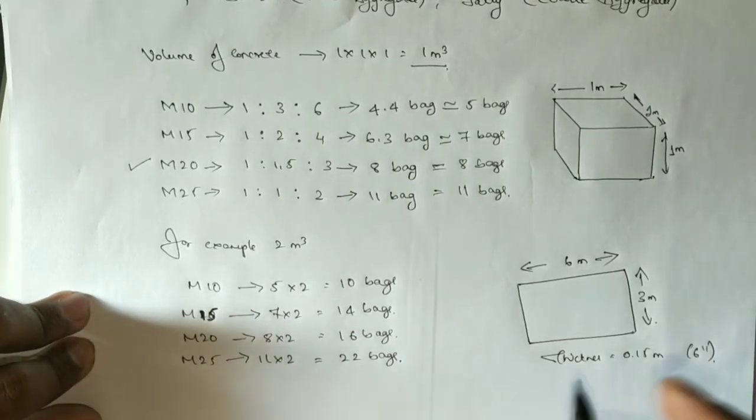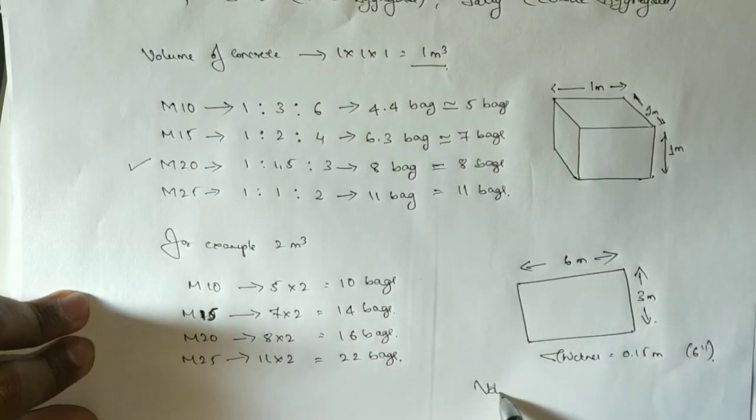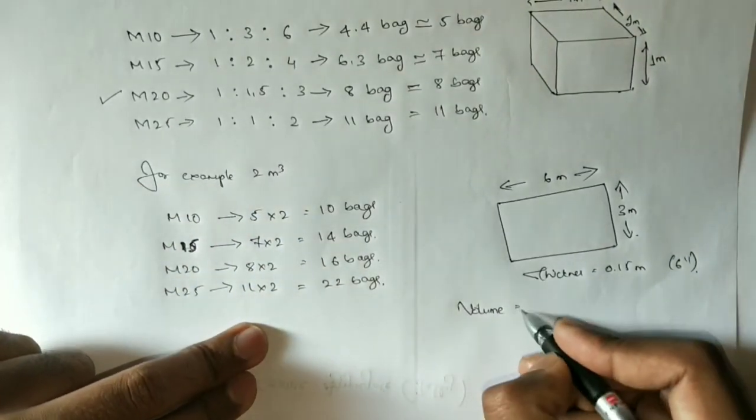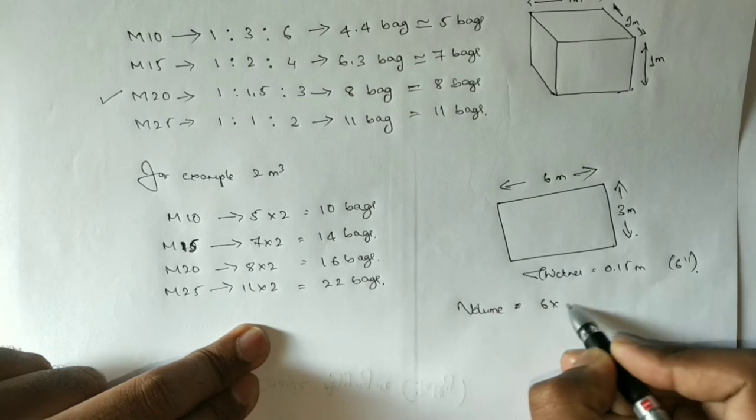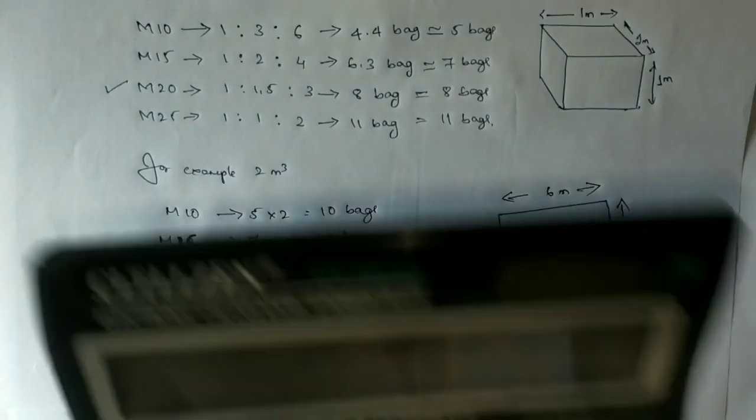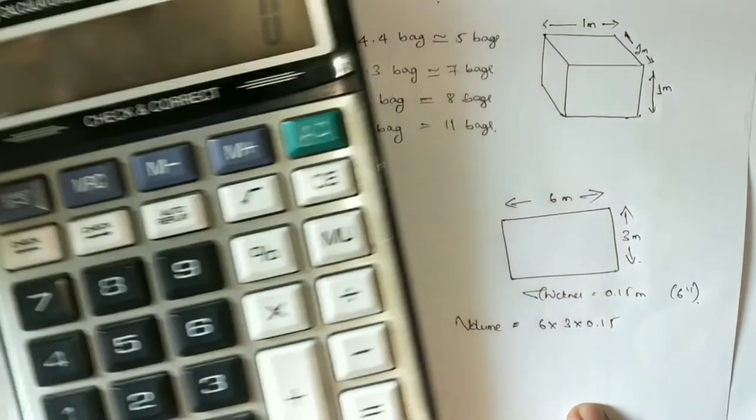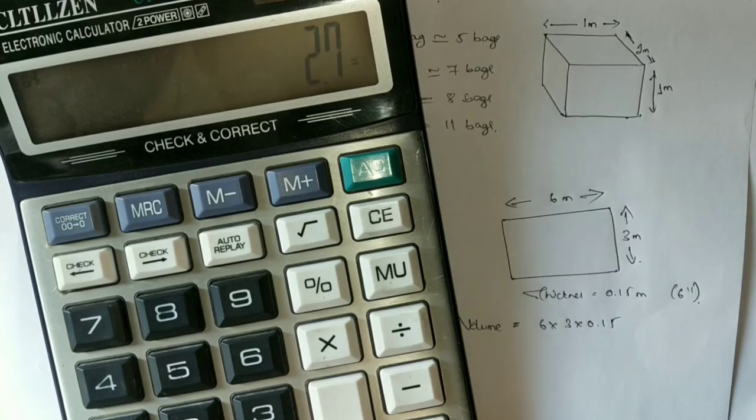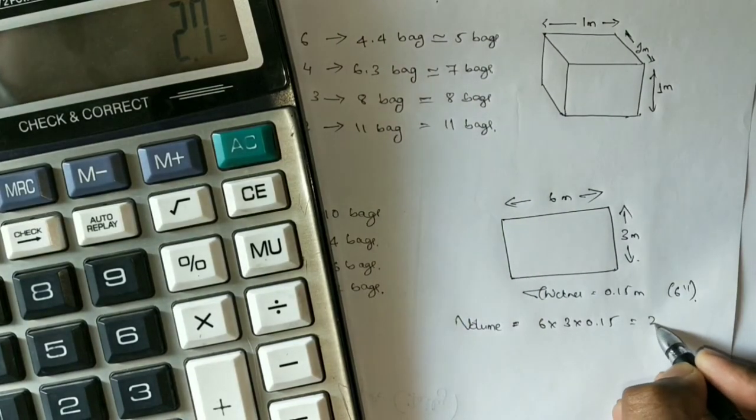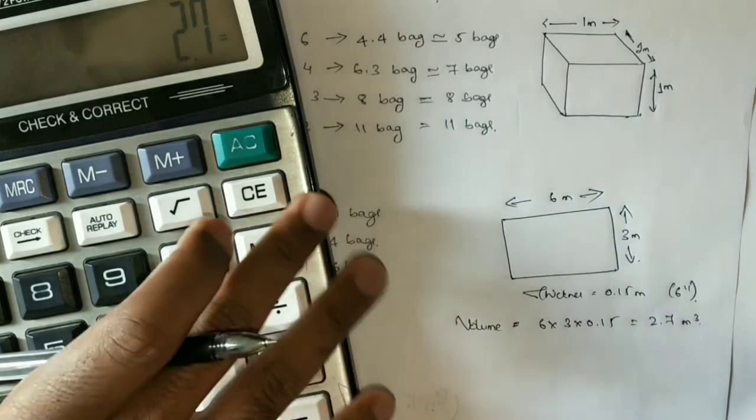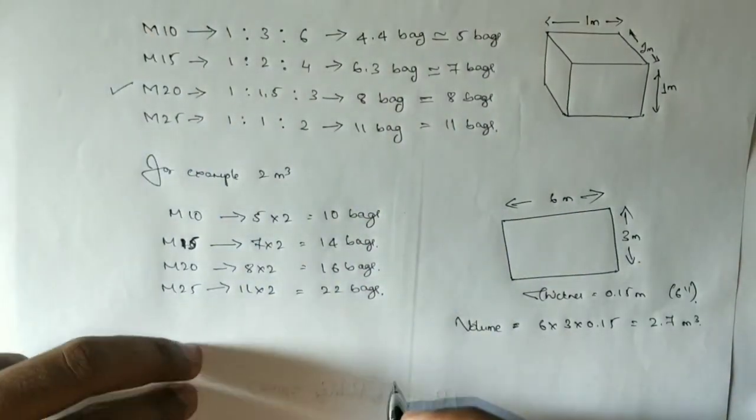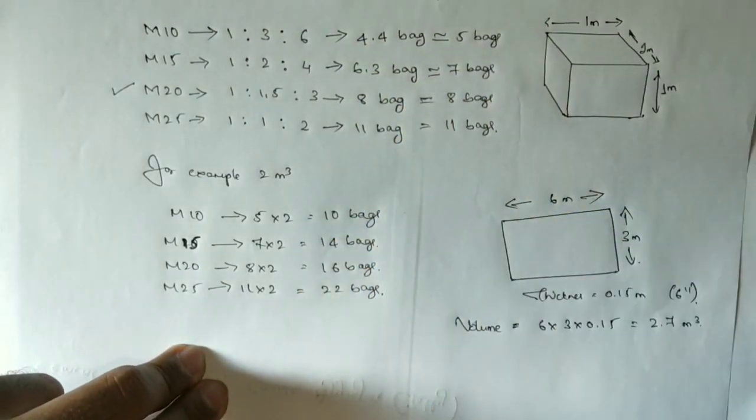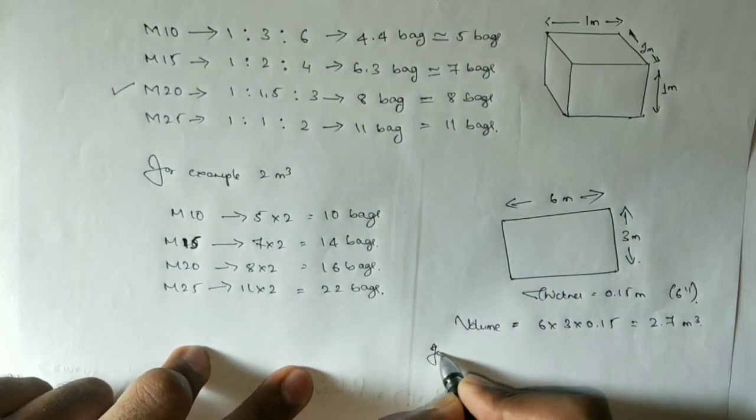The volume will be 6 into 3 into 0.15, which will be equal to 2.7 cubic meters. So you have 2.7 cubic meters of concrete.